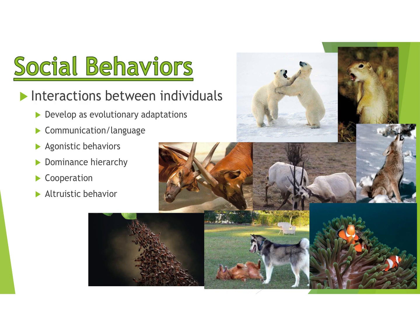We learn many behaviors through social interactions between individuals of the same species or family group. These develop due to evolutionary adaptation to help survival. Social behaviors include communication and language, agonistic behavior (fighting and dominance hierarchies), cooperation (like ants or the clownfish and sea anemone relationship), and altruistic self-sacrificing behavior. These are all learned — not innate — acquired by watching older individuals.